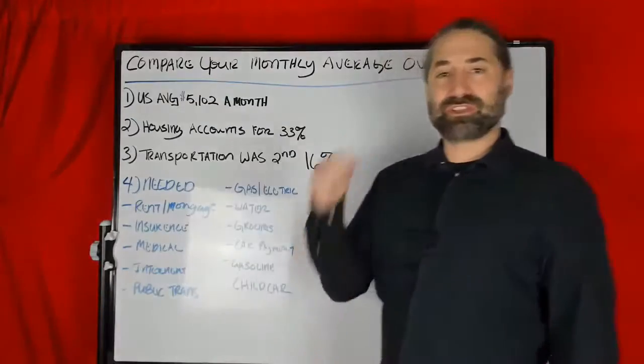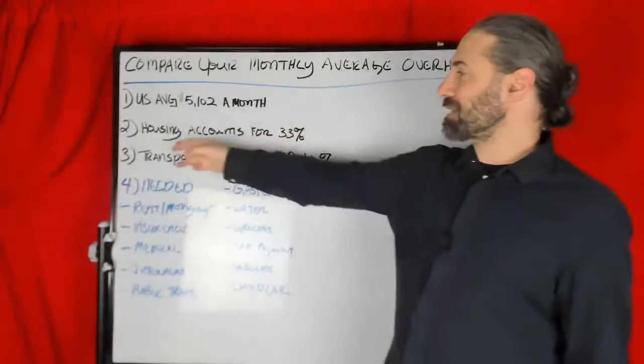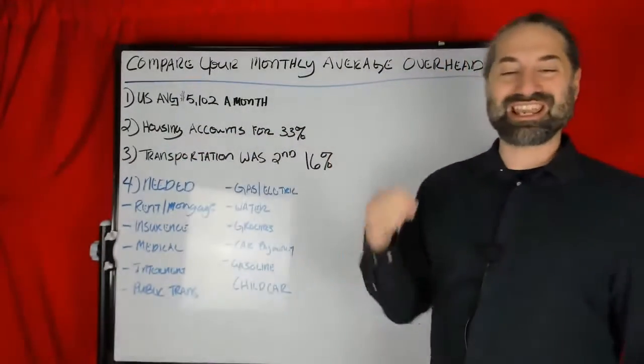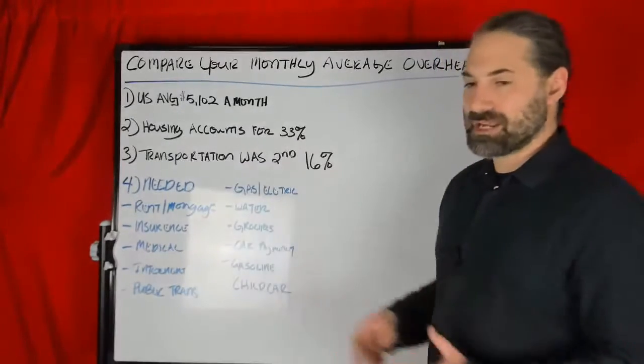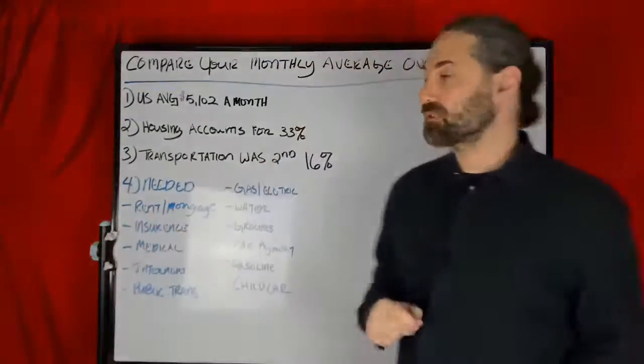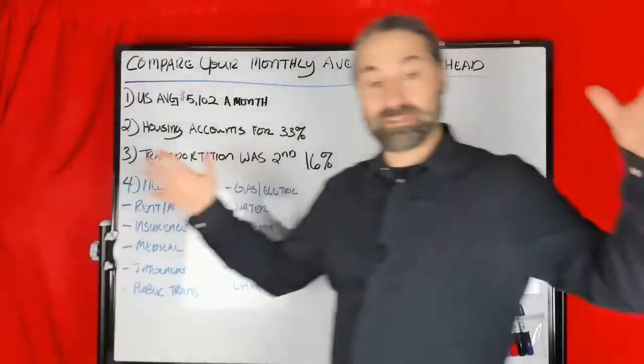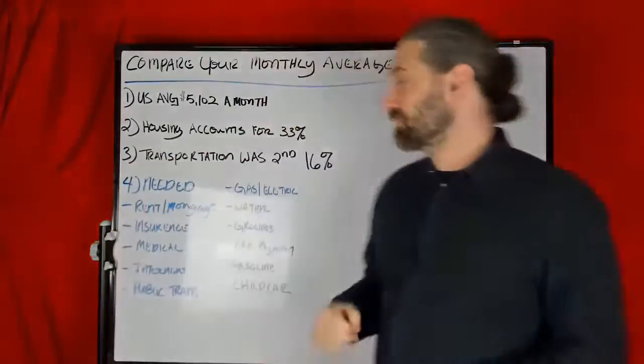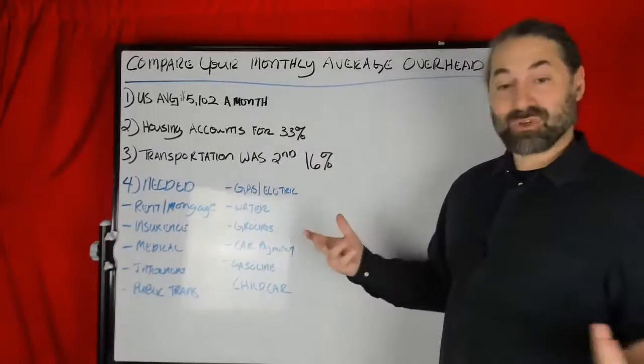Believe it or not, on average, the number one expense is household accounts for 33%. So, that's like rent, utilities, things like that. The things that cost to live in a house or even a housing area, like a rental, is about 33% of your expenses.